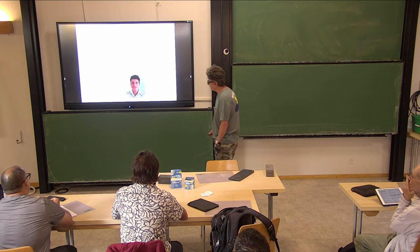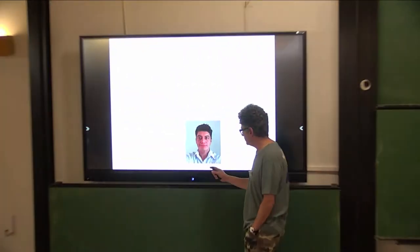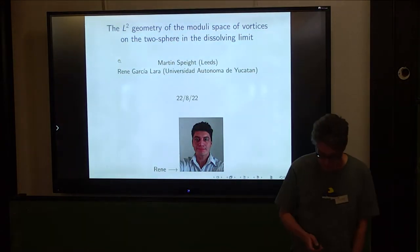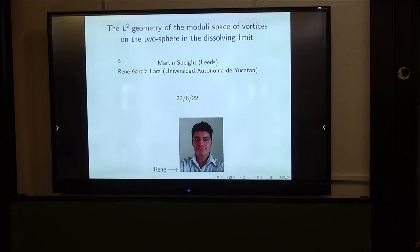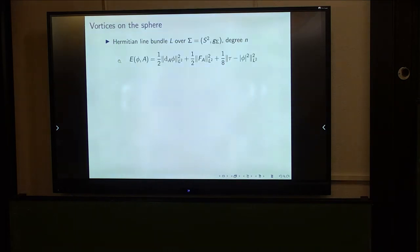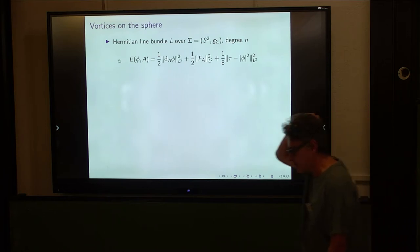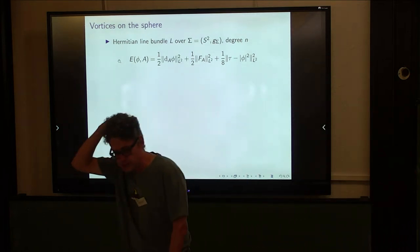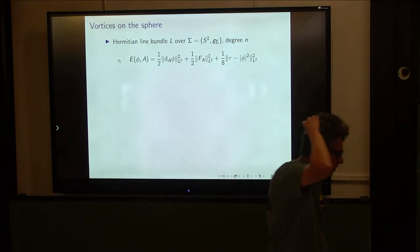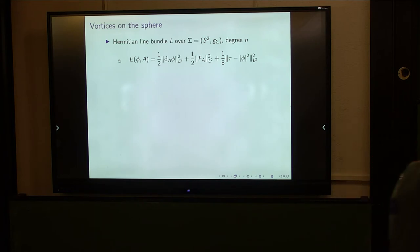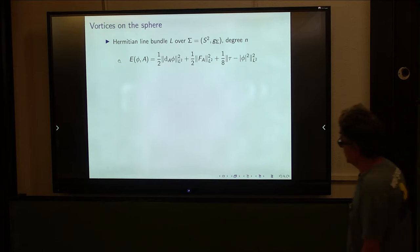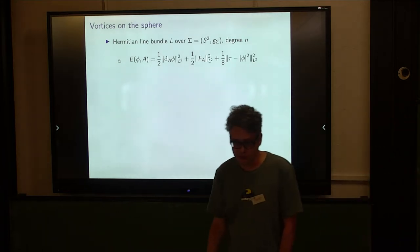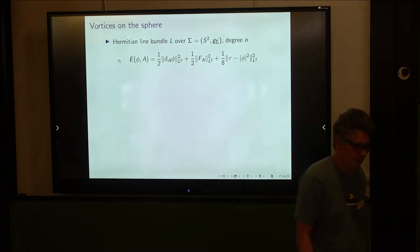This is joint work with my ex-PhD student René Garcia Lara, who is now at the University of Yucatan. We're going to study the absolute most basic, simple moduli space of vortices you could possibly write down. The target space is just a complex line, the gauge group is just U(1), and the domain is just a 2-sphere. You can't get much simpler than that.